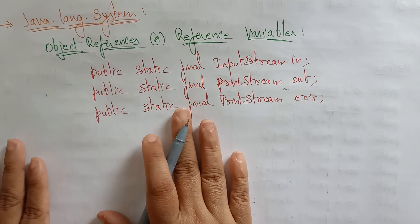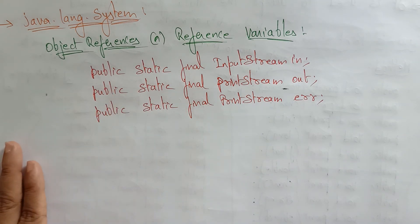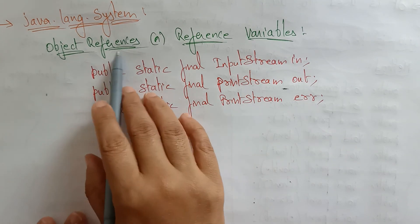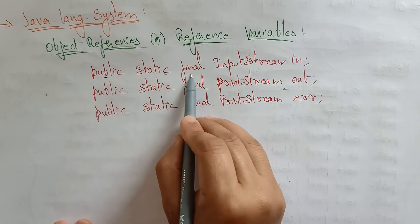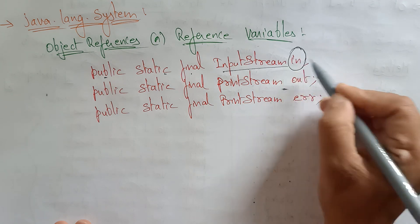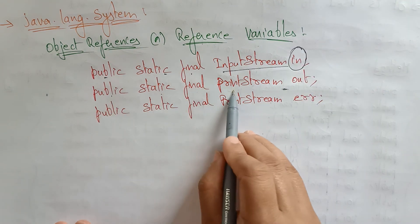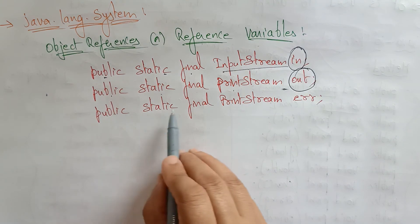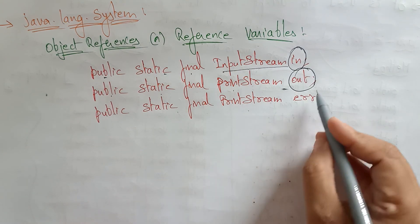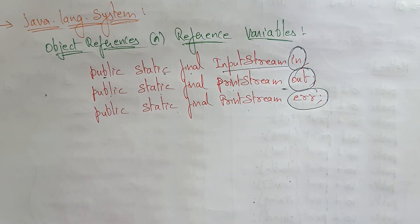In java.lang.System class, the object reference declarations are: public static final InputStream in; public static final PrintStream out; and public static final PrintStream error. With the help of all these methods, we will try to work on a program, which I will explain in the next video. Thank you.